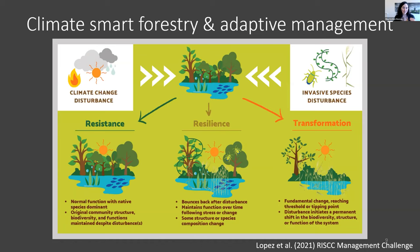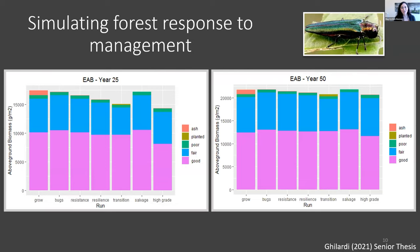I worked with an undergraduate on his senior thesis to look at what the implications of doing adaptive management — rather than typical harvesting — would be for the landscape out to 50 years. One approach we used was a mechanistic model called Landis to grow trees on a theoretical landscape, apply a harvest, and then grow them 25 and 50 years out to look at ecological response.